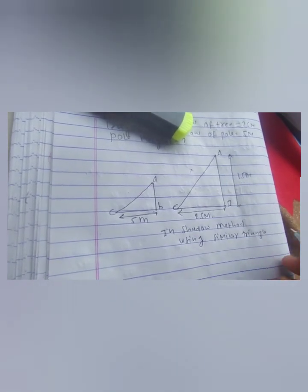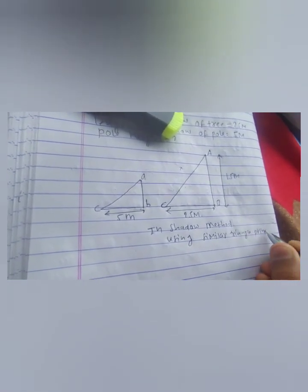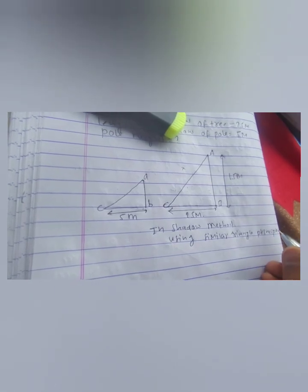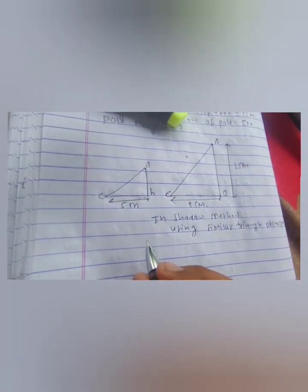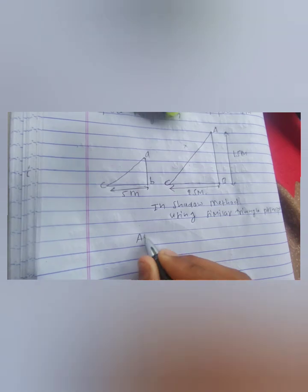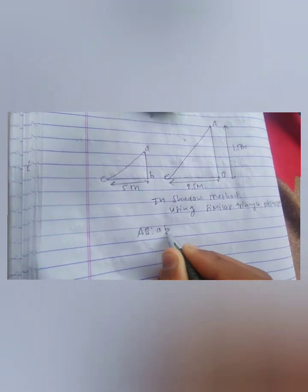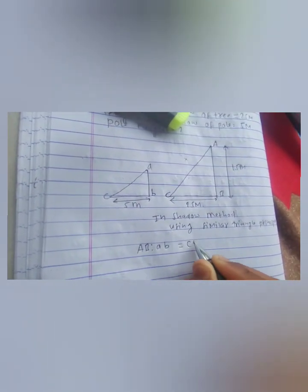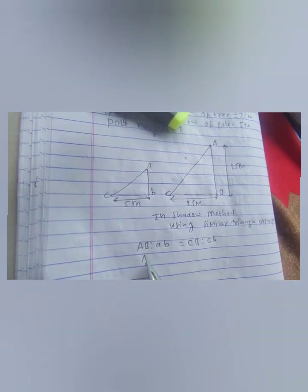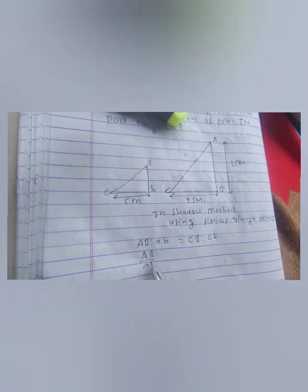In this way you can easily calculate the height of a tree by the shadow method. It is also called the non-instrumental method in forest mensuration. I'm giving here the proportion, converting it into a fraction.